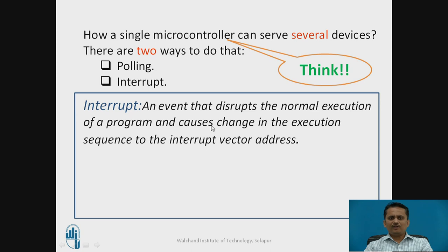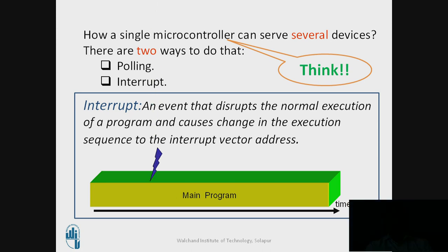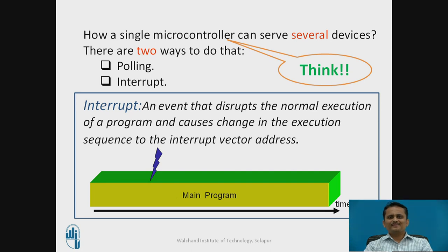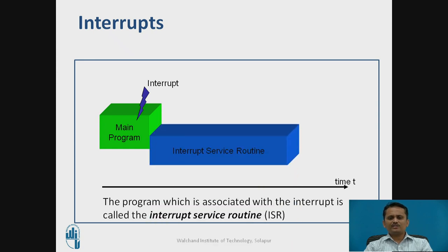The best approach is using an interrupt. An interrupt is basically an event — it can be an external event, called an external interrupt, or an internal event, called an internal interrupt. It disturbs the normal execution of a program and changes the execution sequence. Whenever an interrupt occurs during execution of the main program, execution changes to something called the interrupt service routine (ISR).